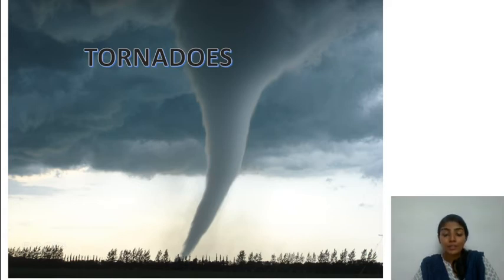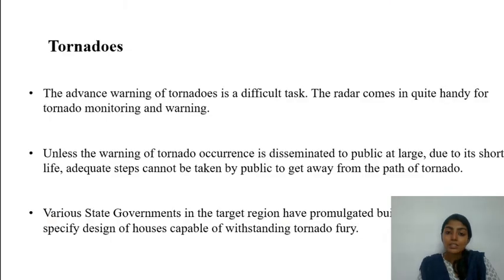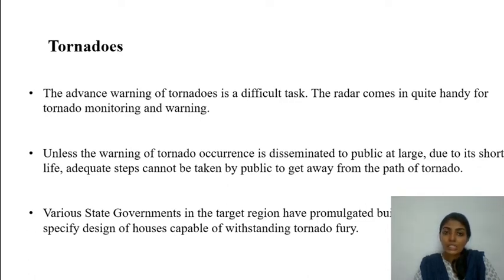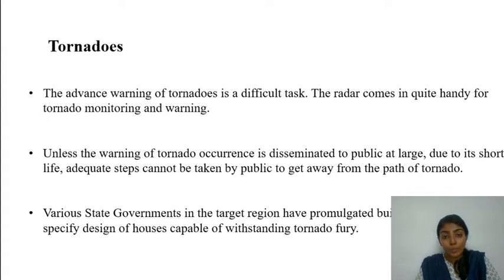We have certain mitigation measures — state governments in probable tornado regions have publicized building laws which include certain designs that can withstand or resist tornado destruction. However, unless tornado warnings are disseminated to the public at large, people may not get enough time to take adequate measures to get away from the path of tornadoes. So mitigation alone is not enough; we require an early warning system.